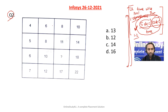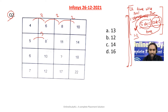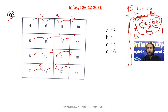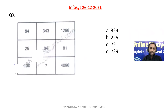Now for question number two: the difference pattern here is 2, 2, 2 for the first set; then 3, 3, 3 for another; then 4, 4, 4; then 5, 5, 5 — each group follows a particular constant difference pattern. So for question number two the answer will be option C.